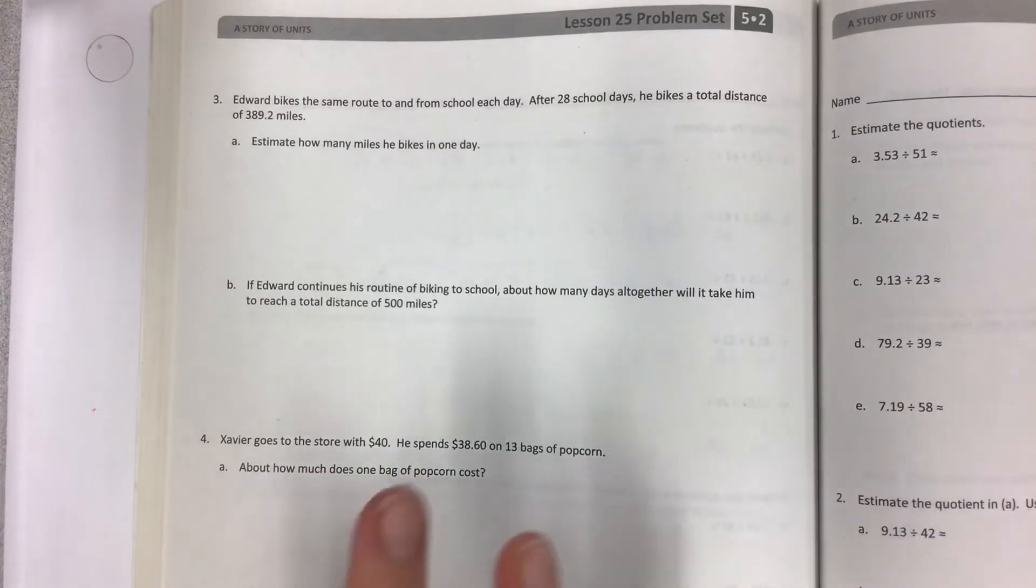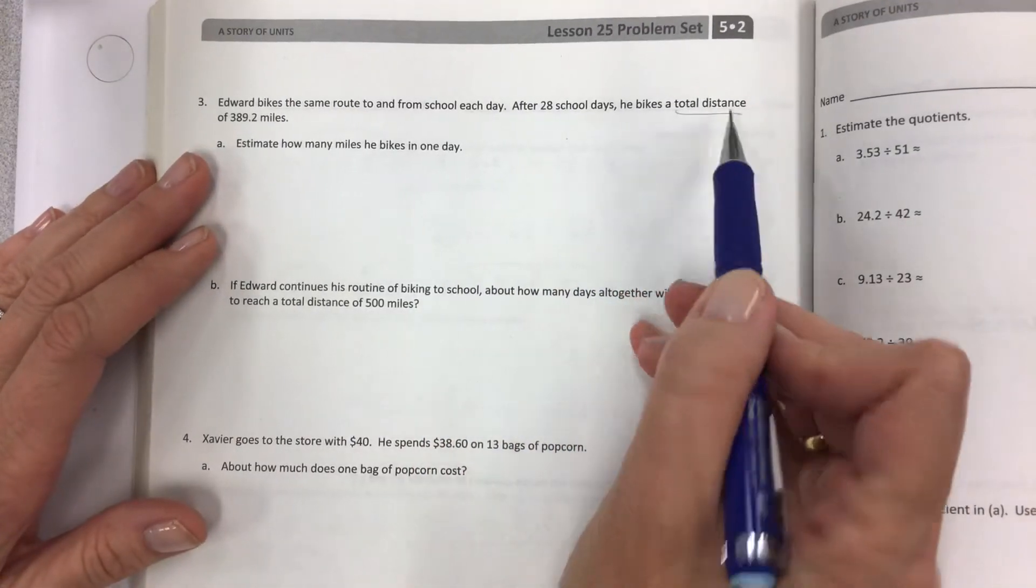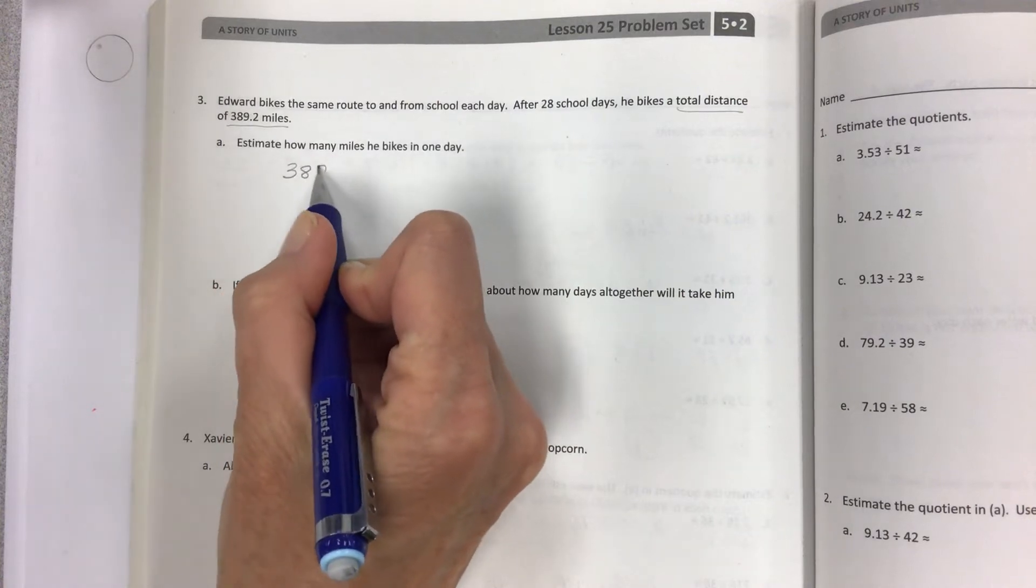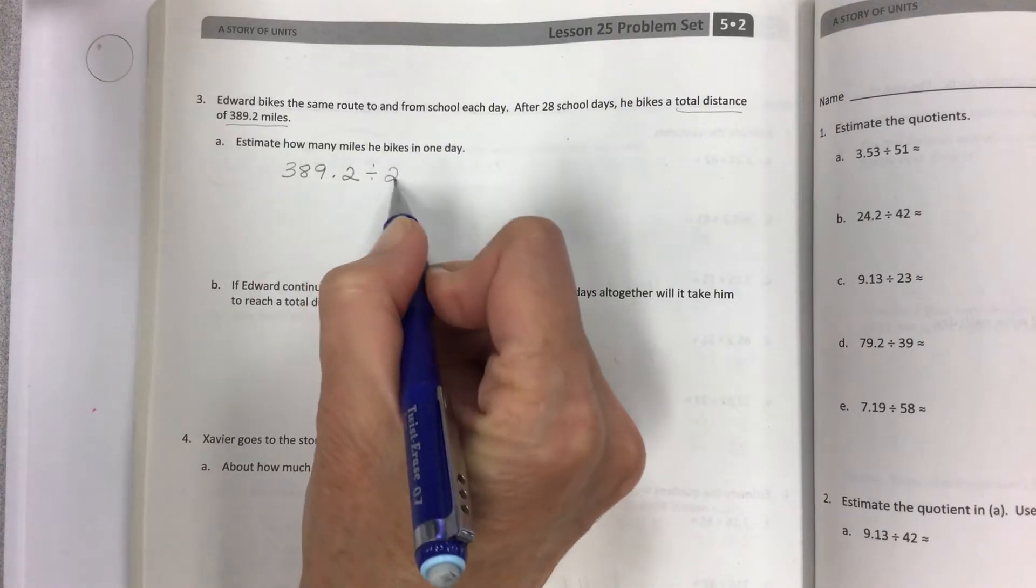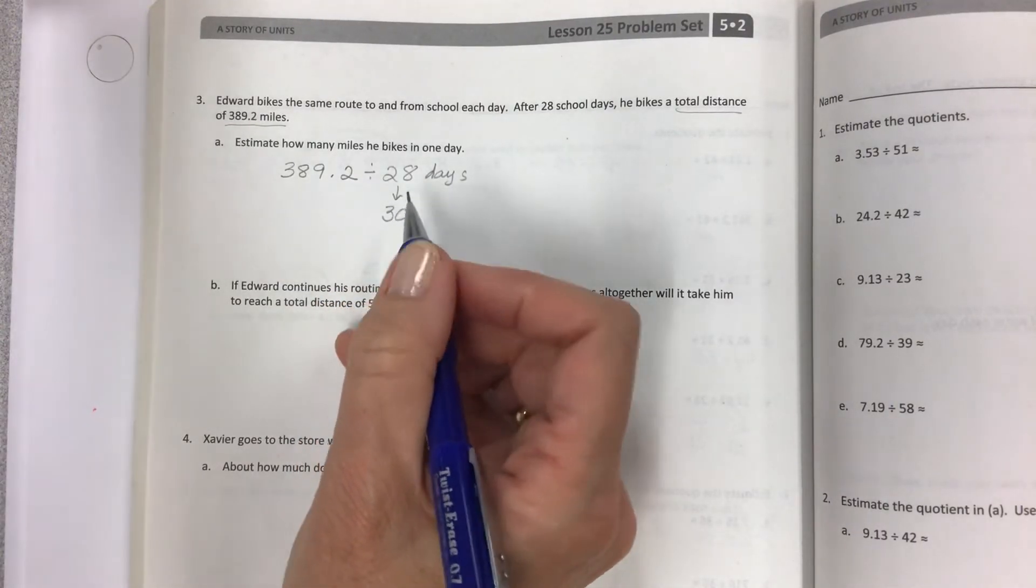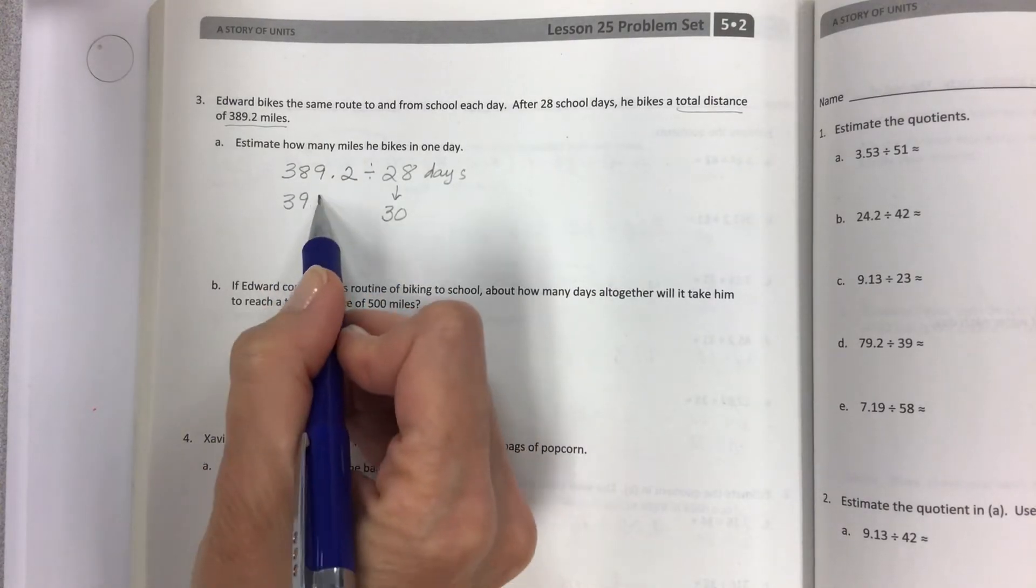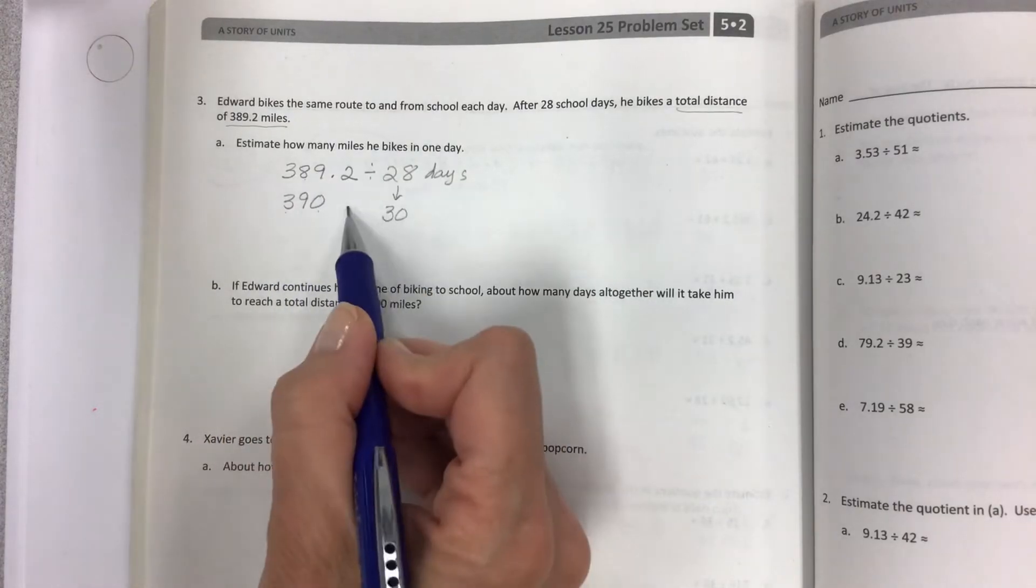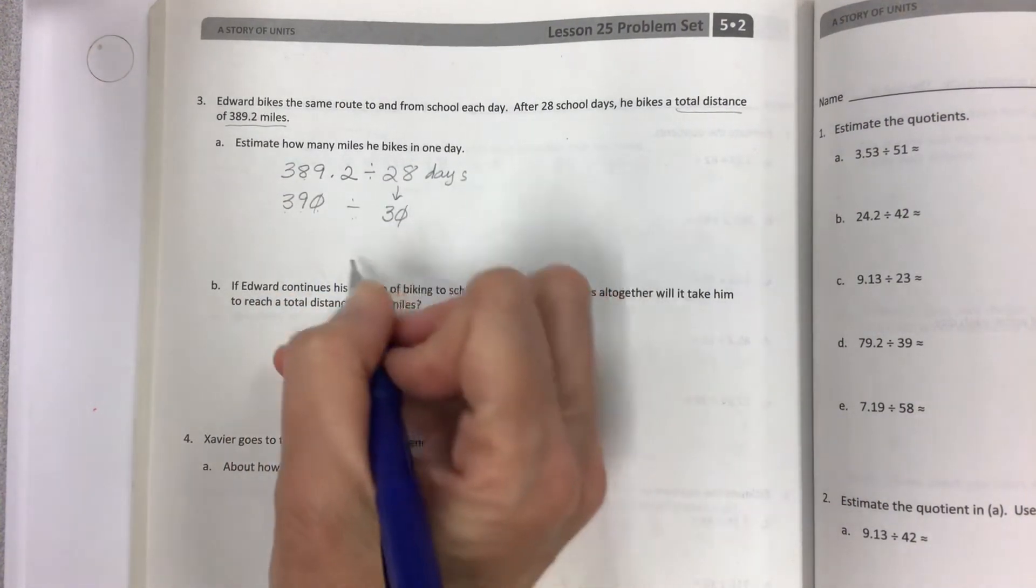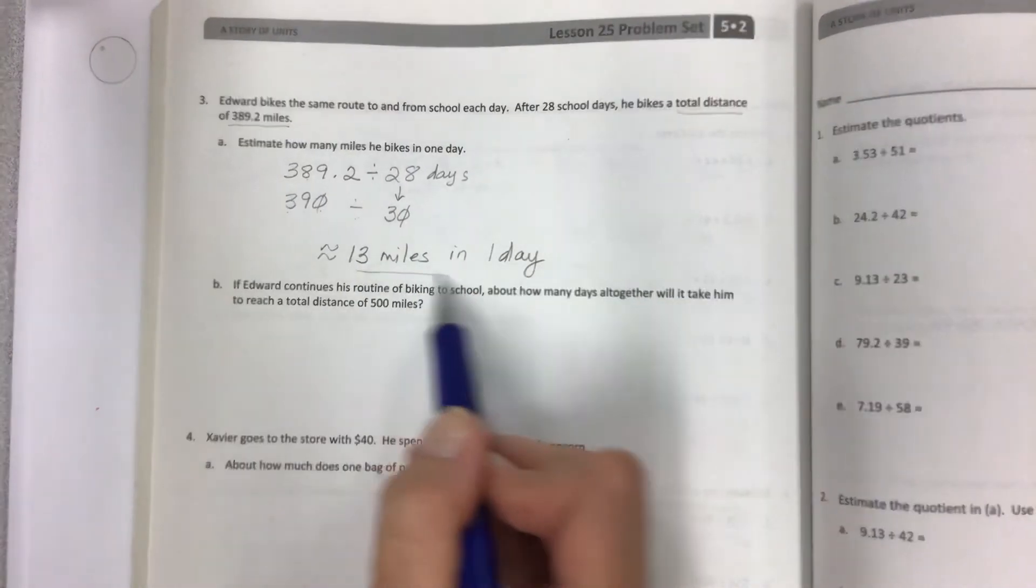Next one, number 3, A and B. Edward bikes the same route to and from school each day. After 28 school days, he bikes a total distance of 389.2 miles. Estimate how many miles he bikes in one day. So let's take our total number of miles, 389.2, and we'll divide it by our 28 days. But we don't actually have to do the real division, we're just going to estimate. So when you round the divisor first, I can't help but see that this is very close to 39, which is a multiple of 3. So rounding 389 to 390 would be very easy for us. And we can also then offset the zeros and have 39 divided by 3 to get approximately 13 miles in one day, which is pretty nice.